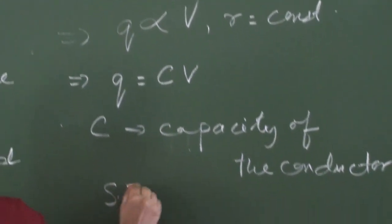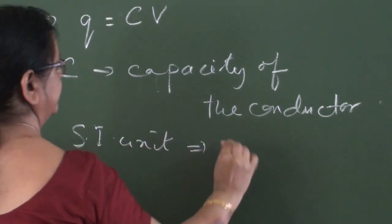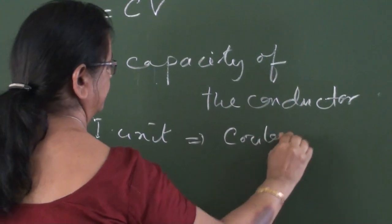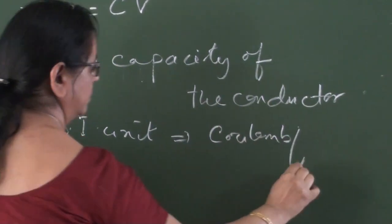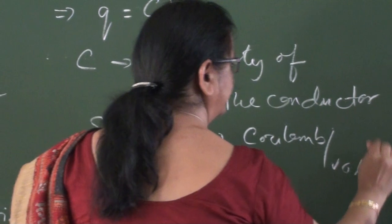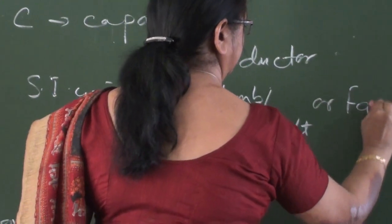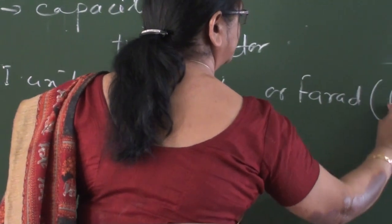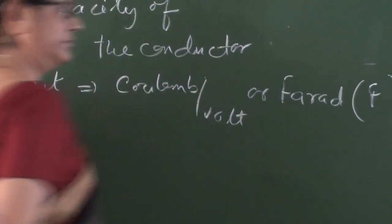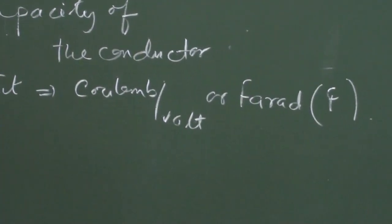And what would be the SI unit of this capacity? It would be coulombs per volt. We have one word for it, which is farad, and we usually represent it by F. So this is the SI unit of capacity.